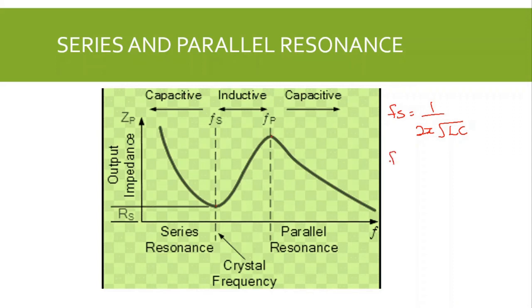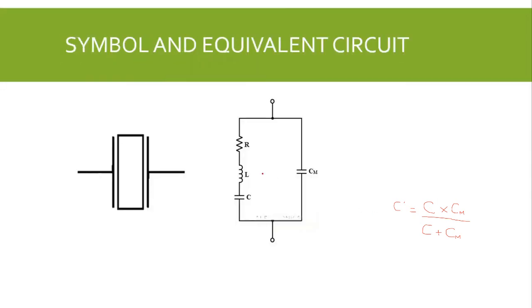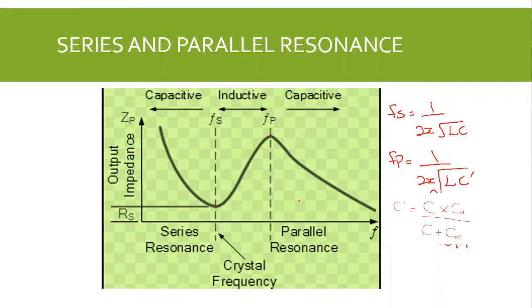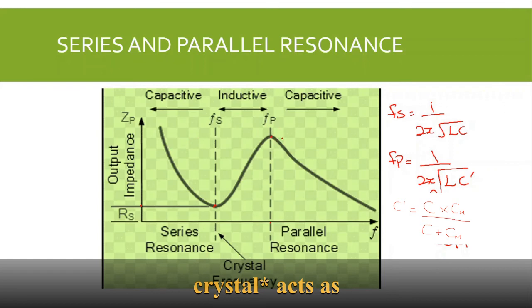At the parallel resonance frequency, the frequency is given as F = 1/(2π√(LC')), where C' is the parallel combination of C and Cm, equal to (C × Cm)/(C + Cm). C is the capacitor in the series RLC leg and Cm is the shunt capacitance. The parallel resonance condition occurs at a higher frequency than the series resonance condition. At series resonance the impedance is minimum, while at parallel resonance the impedance is maximum. After the parallel resonance condition, the crystal oscillator again acts as a capacitive element.